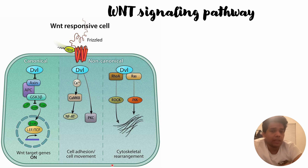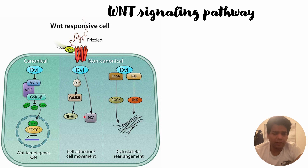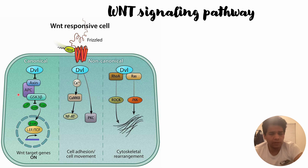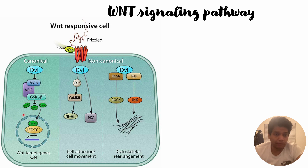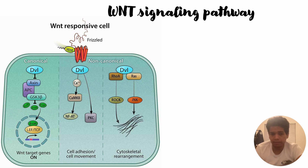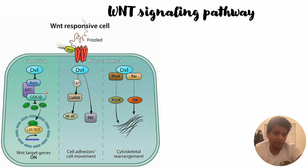JNK signaling helps in cytoskeletal rearrangement and thereby enhances cell movement. When cell adhesion properties are reduced, both of these non-canonical pathways work together for cell movement from one place to another. One of the main functions of the canonical pathway — through beta-catenin interacting with E-cadherin — is tissue repair and embryogenesis. If these reactions become uncontrolled, beta-catenin may go into the nucleus, trigger oncogene upregulation, and lead to cancer development within the host.